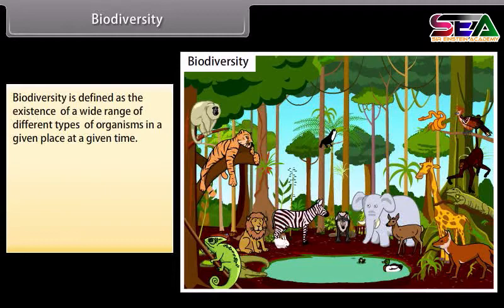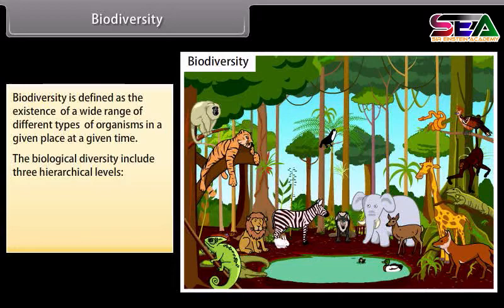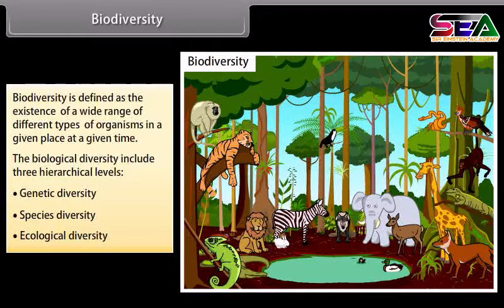Biodiversity is defined as the existence of a wide range of different types of organisms in a given place at a given time. Biological diversity includes three hierarchical levels: genetic diversity, species diversity, and ecological diversity.